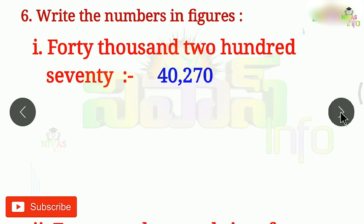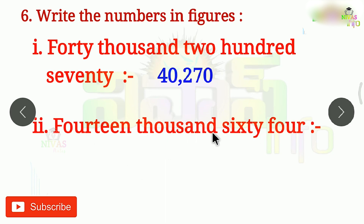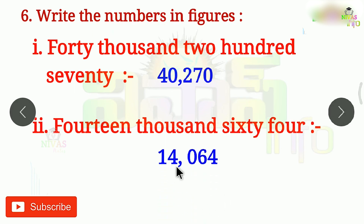The second problem is 14,064. The 10,000 place is 1. The 1,000 place is 4. You can add from 100,000 to 50,000. So 100 — our value is 14,00 before.